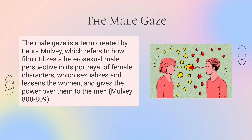The male gaze theory states that the camera is never a neutral observer. Instead, it forces all viewers to assume a heterosexual male point of view. The male gaze portrays women as sexual objects and as passive characters who serve the male protagonist's desires. This causes the audience to identify with the camera that is objectifying the woman, and with the male protagonist, meaning the viewers themselves end up objectifying the female characters.